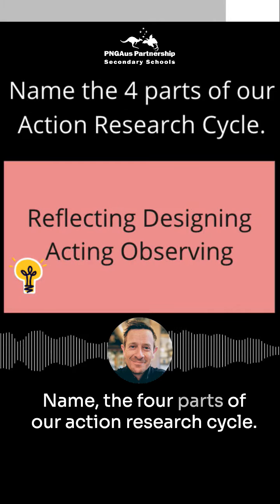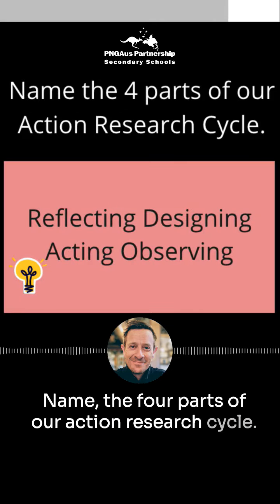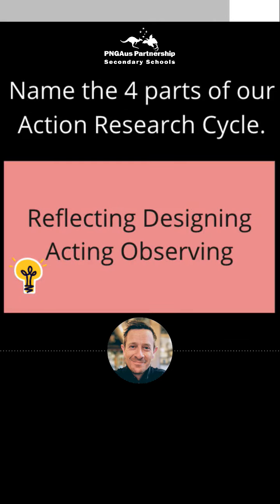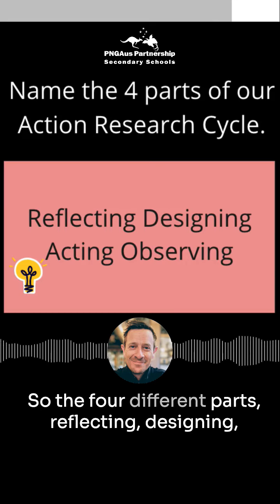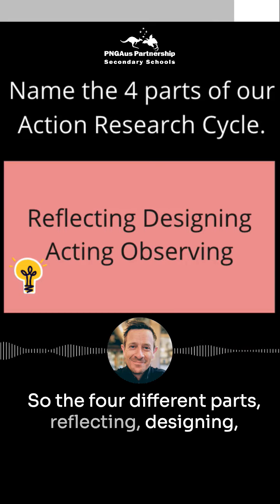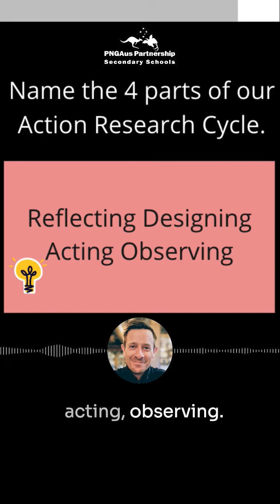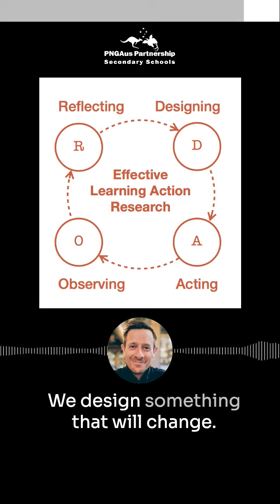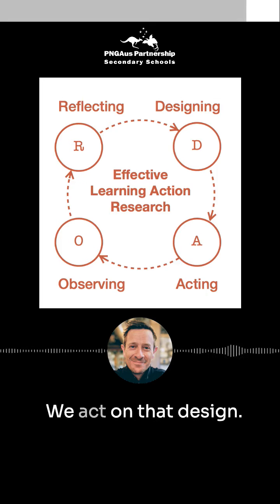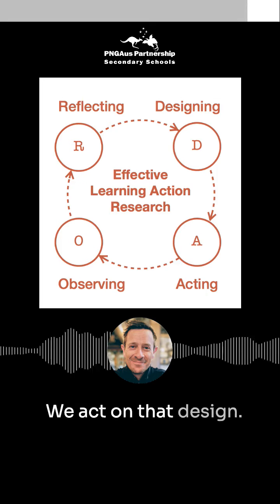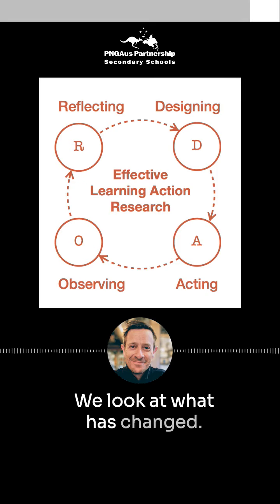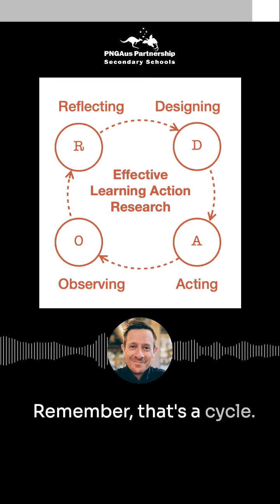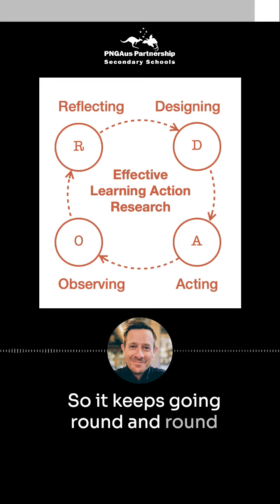Name the four parts of our action research cycle. The four different parts are: reflecting, designing, acting, and observing. We reflect on our practice, we design something that will change, we act on that design, and we look at what has changed. Remember, that's a cycle — it keeps going round and around.